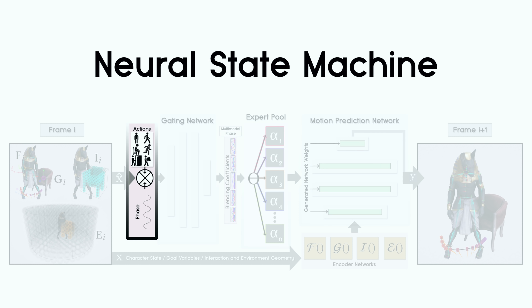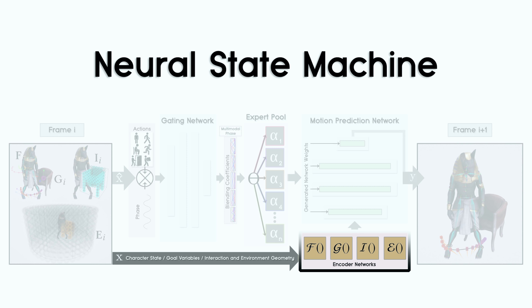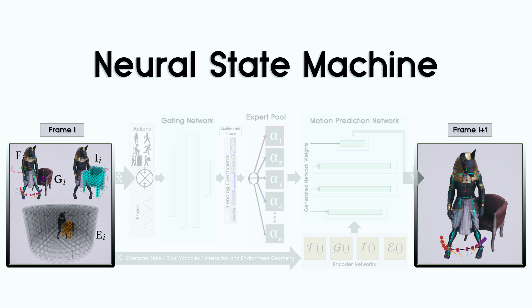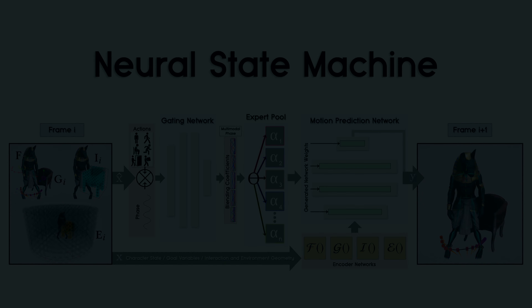Using the phase combined with the character state, the system learns a multi-modal segmentation of movements, actions and transitions that are possible at each state. We further use separate encoders for the character pose, scene geometry and user control signals to predict the character motion from one frame into the next. All network components are trained together in an end-to-end fashion.